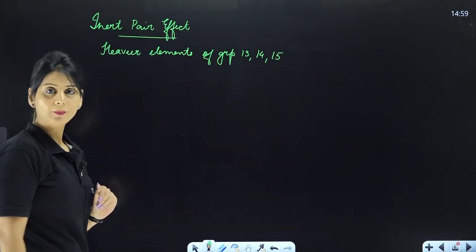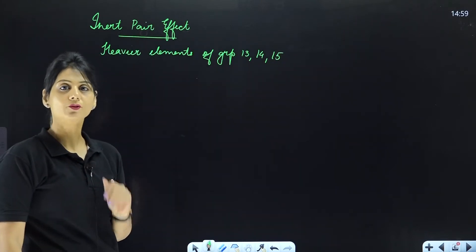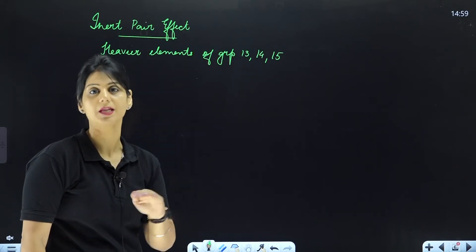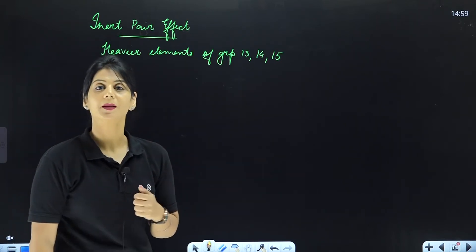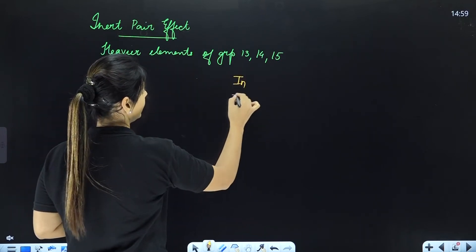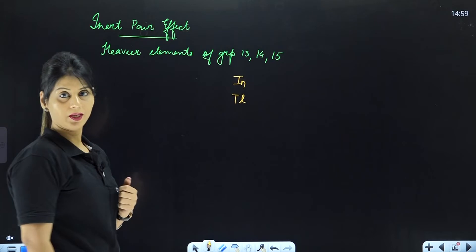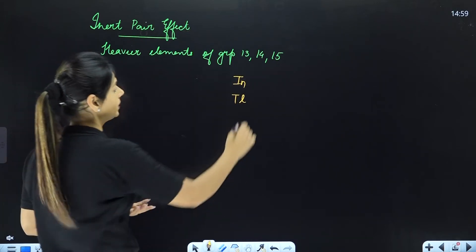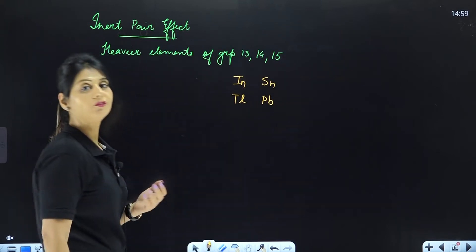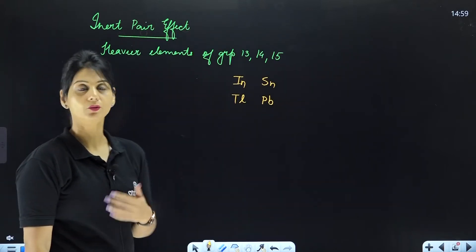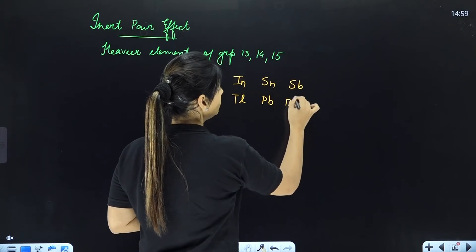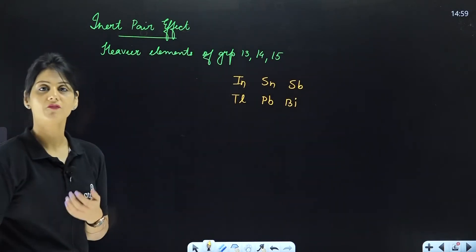These are the carbon family and the nitrogen family — the heavy elements. In group 13, heavier elements include indium and thallium. In group 14 (the carbon family), heavier elements include tin and lead. In group 15 (the nitrogen family), there will be antimony and bismuth. This concept is called the inert pair effect.